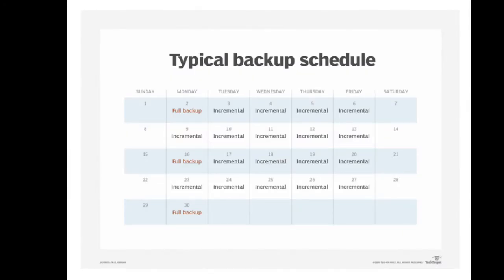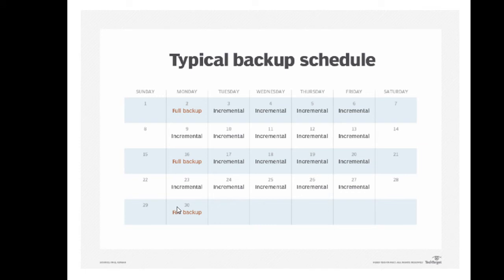Here's a typical backup schedule example: on Monday, a full backup; then Tuesday through Friday, incremental backups. The next week, incrementals through Friday, and then after two weeks, another full backup — and so on. This depends on how critical your data are. If they're critical, you may want a full backup every Monday. Keep in mind that full backups are slower than incremental backups, so as a database administrator you have to weigh your options based on your business needs, data criticality, and data volume.